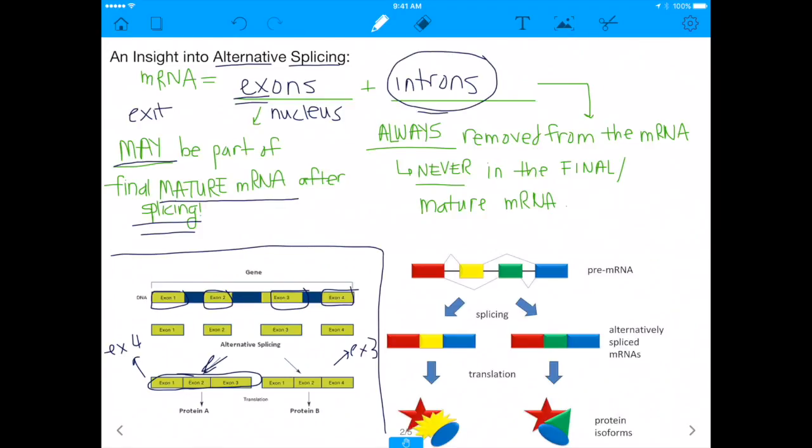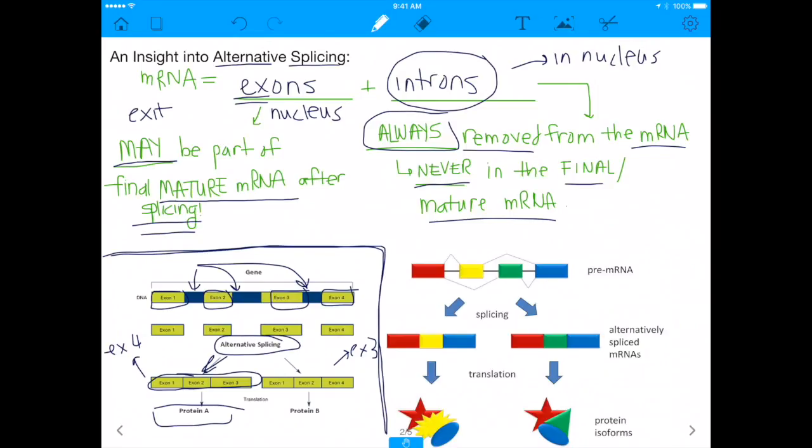You'll see that exon 1, 2, 3, and 4 are exons. In one splice variant, exon 1, 2, and 3 leave the nucleus, and exon 4 is left out. Similarly here, exon 3 is left out. So the point is, exons may be part of the final mature mRNA after splicing. The exon may be a part of it, and it may not be. But the point is, usually, the final transcript only has exons in it. Which brings me to my second point, introns.